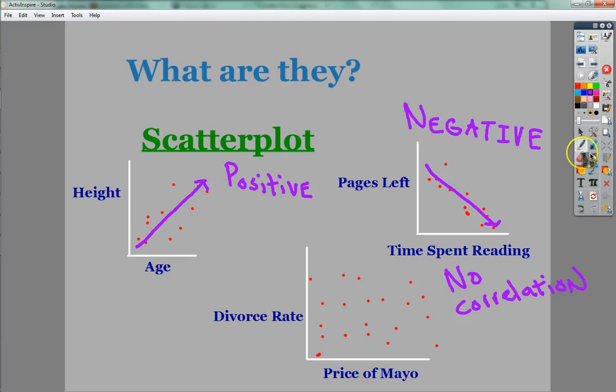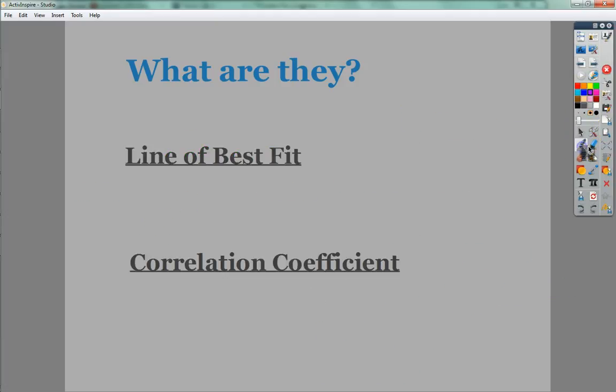Correlation coefficient shows us how closely related the data is. It's like a furthering, in a way, of the line of best fit. We call the correlation coefficient R.